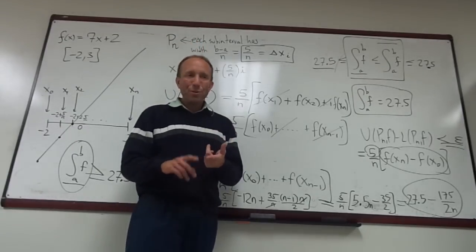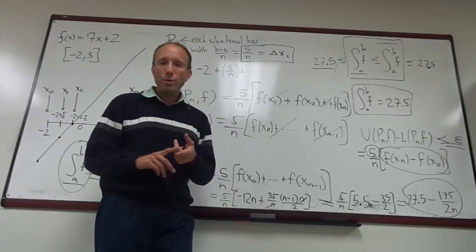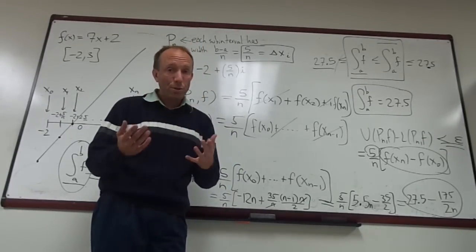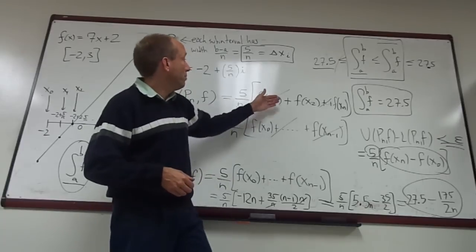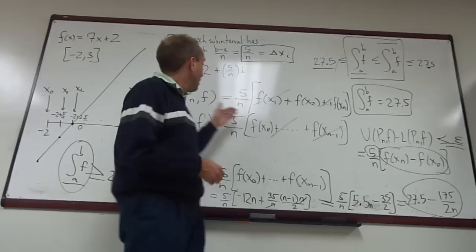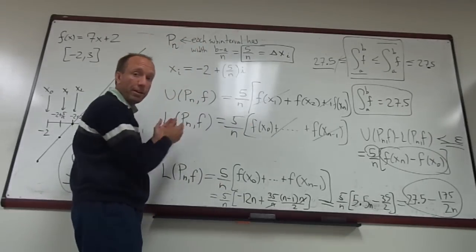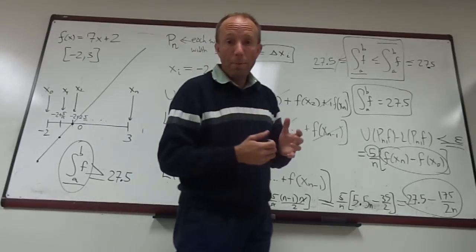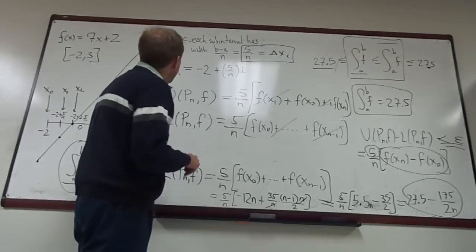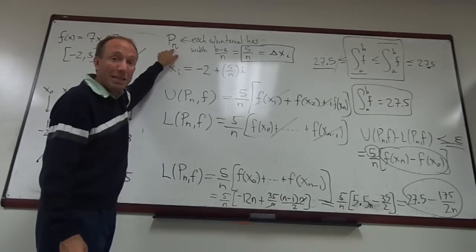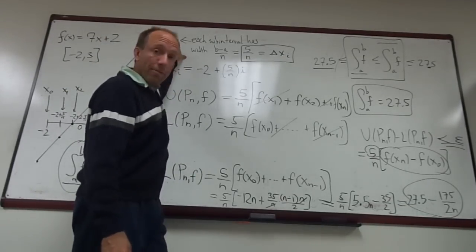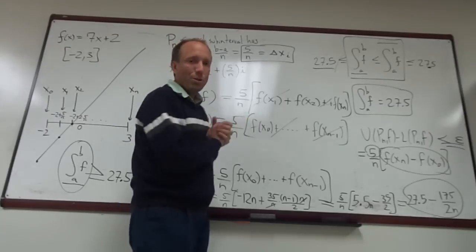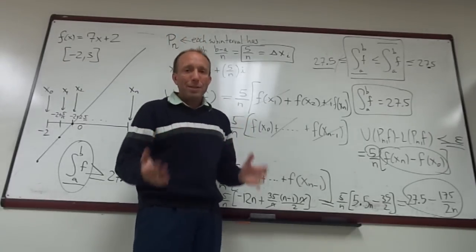So there's a problem on the homework where I think I asked you to work with e to the x. That's a monotone increasing function. So you might be able to take advantage of this comparison of U P f and L P f. There will be a lot of common terms. And then there's another problem on the homework where I think I asked you to work with this P sub n partition specifically, and do something kind of similar to what I showed you here. I hope this is helpful.